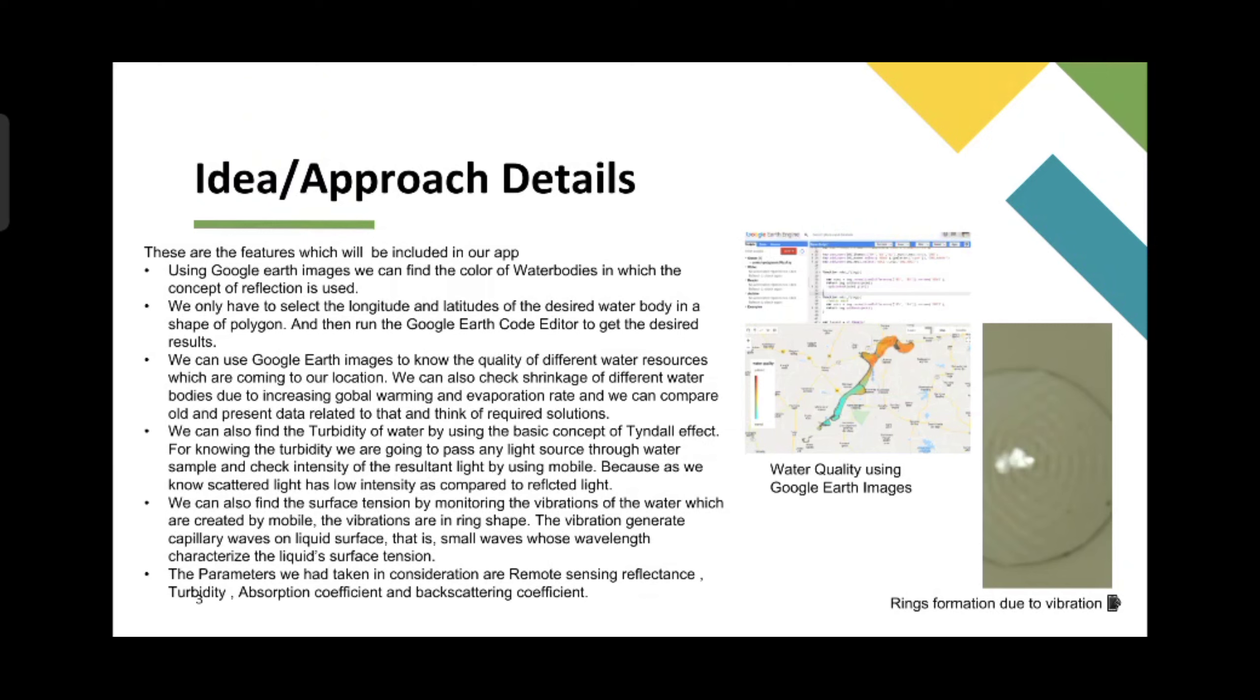These are some of the key features which will be included in the application. Using Google Earth images we can find the color of water bodies in which the concept of reflection is used. We only have to select the longitude and latitude of the desired water body in the shape of a polygon and then run the Google Earth Engine Code Editor to get the desired results.